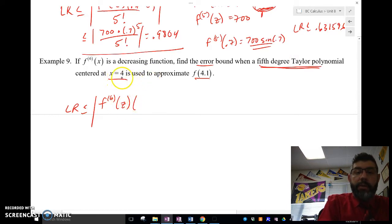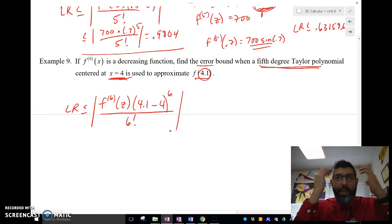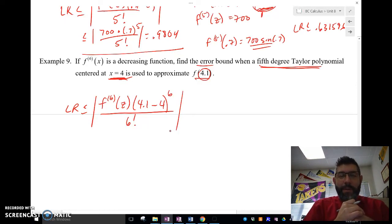X equals, this is centered at 4. So, we're going to go, what's our x value? Our x value is 4.1. So, 4.1 minus centered at 4 raised to the sixth over 6 factorial. So now, what is going to be our z value? Well, there's an indication in this to tell us what our z value is. This is a decreasing function.